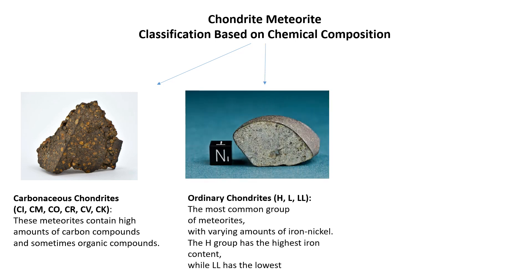Ordinary chondrites (H, L, LL): the most common group of meteorites with varying amounts of iron and nickel. The H group has the highest iron content while LL has the lowest.